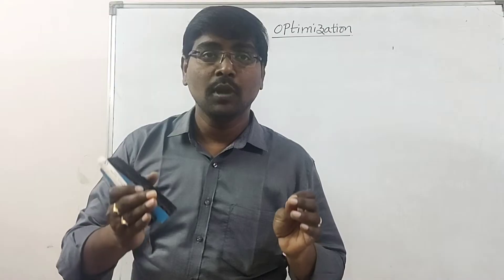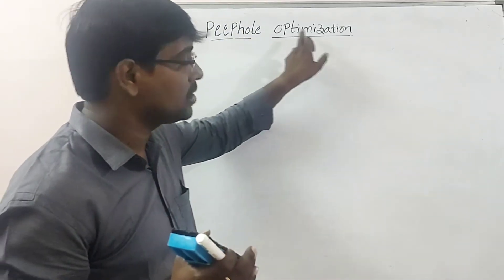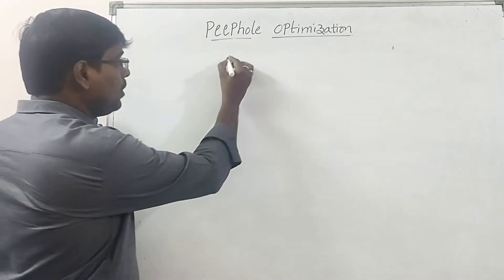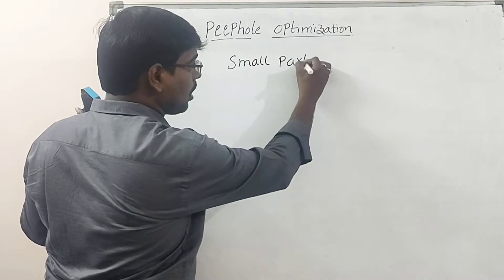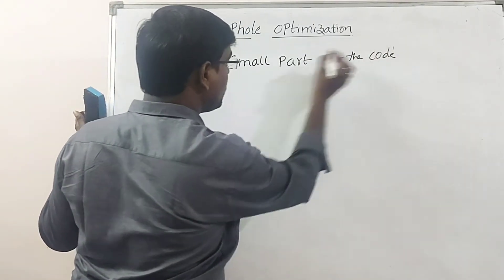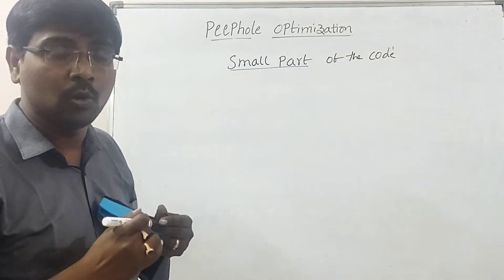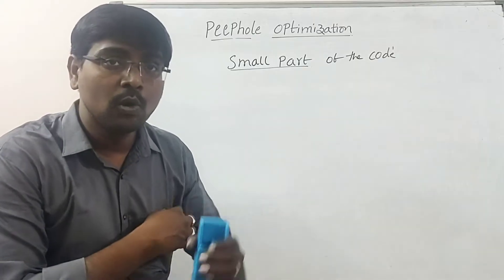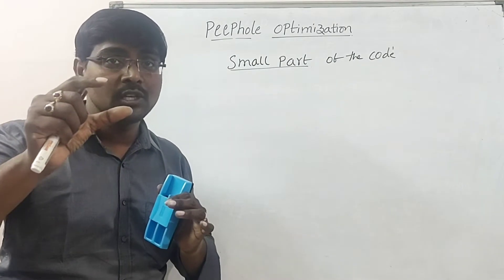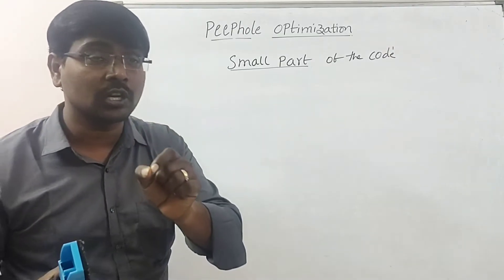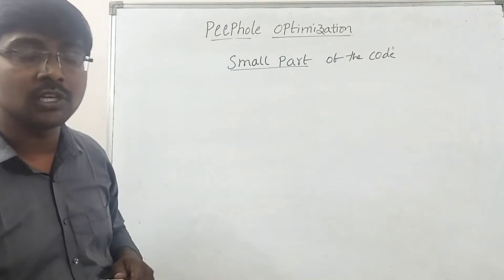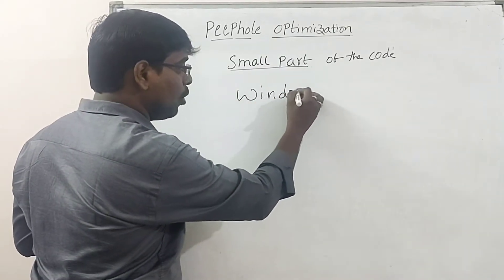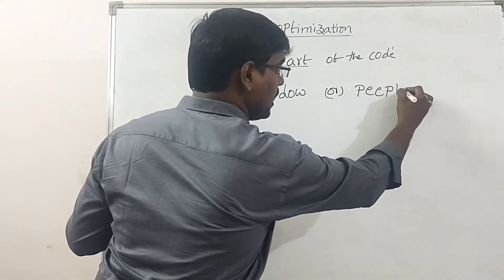Welcome to our channel. In this session we are going to discuss Peephole Optimization. Peephole Optimization is simply an optimization performed on a small part of the code. Generally your program consists of multiple instructions, and among all the instructions we consider only some set of instructions. This small set of instructions is called a window, or also called a Peephole.